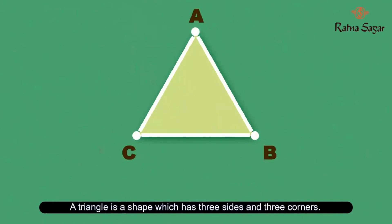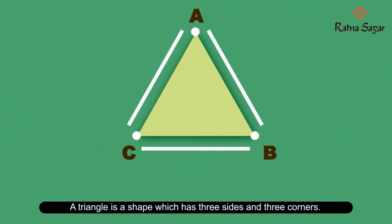A triangle is a shape which has 3 sides and 3 corners. The sides of this triangle are AB, BC, and AC. Its 3 corners are A, B, and C.